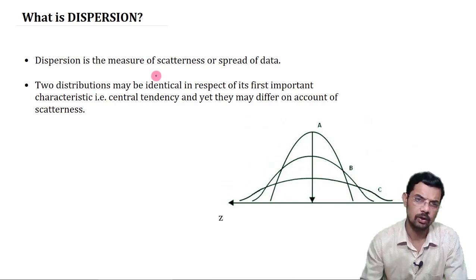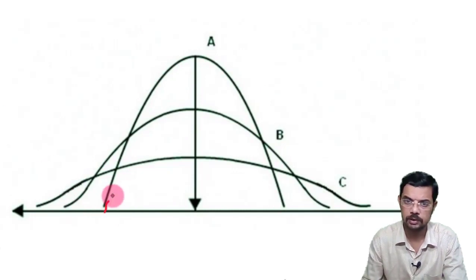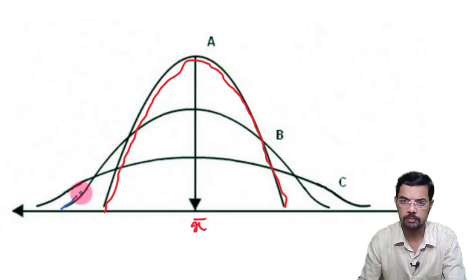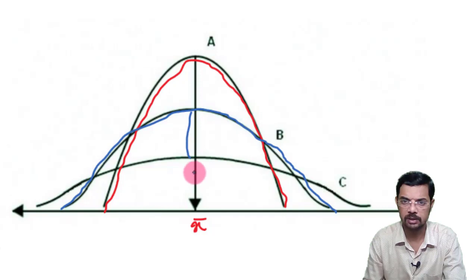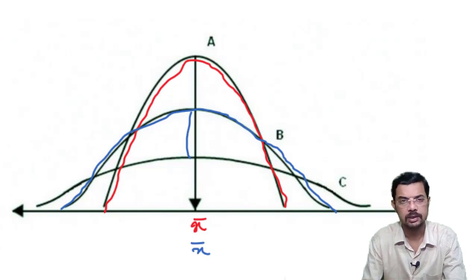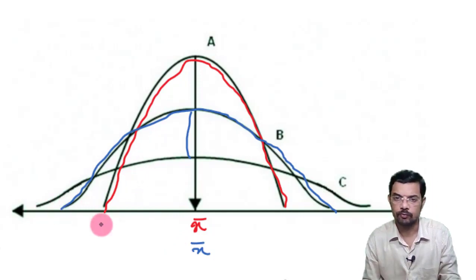Let us look at this through a diagram. Consider curve A — the red one. Here the mean is located at a certain point. Similarly, the blue curve, curve B, also has its mean x-bar at the same position. The third curve also has the same mean position.